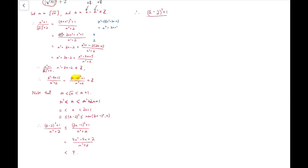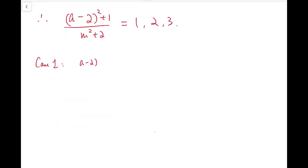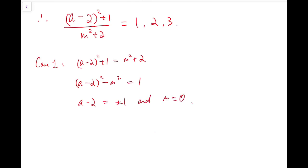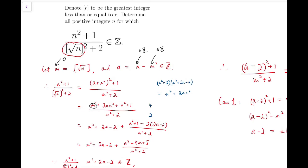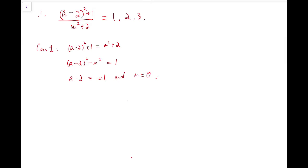So now we have finitely many possibilities: this expression can only be 1, 2, or 3. Case 1: (a minus 2) squared plus 1 equals m squared plus 2, so (a minus 2) squared minus m squared equals 1. If the difference of two squares equals 1, the only solution is a minus 2 equals plus or minus 1 and m equals 0. But a must be 0 in that case, and it's actually impossible because the floor function of square root of n is at least 1 — so there's a contradiction.